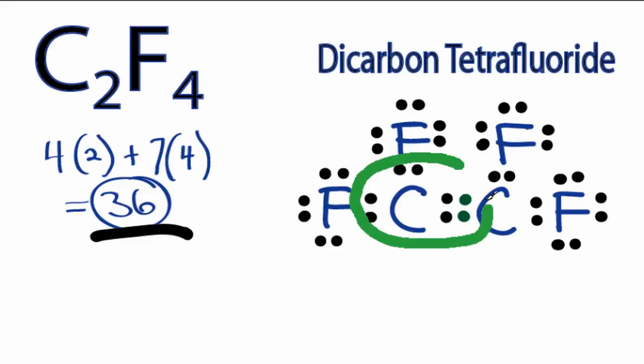So now this carbon has 8, and this carbon has 8. So by sharing that pair of electrons, we've been able to complete the octets on the carbons. The fluorines are good. So this is the Lewis structure for C2F4, and this is Dr. B. Thanks for watching.